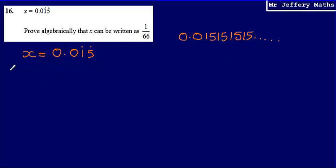Now, the way in which we're going to do that is we're going to first of all multiply x by 1000. So multiply 0.015 by 1000, and what that equals is 15.15 recurring.